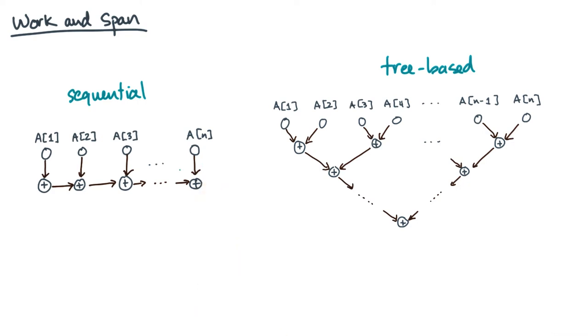The tree, by contrast, can use parallelism at every level. So the sequential DAG will take O of n time, whereas the tree-based DAG will take log n time.